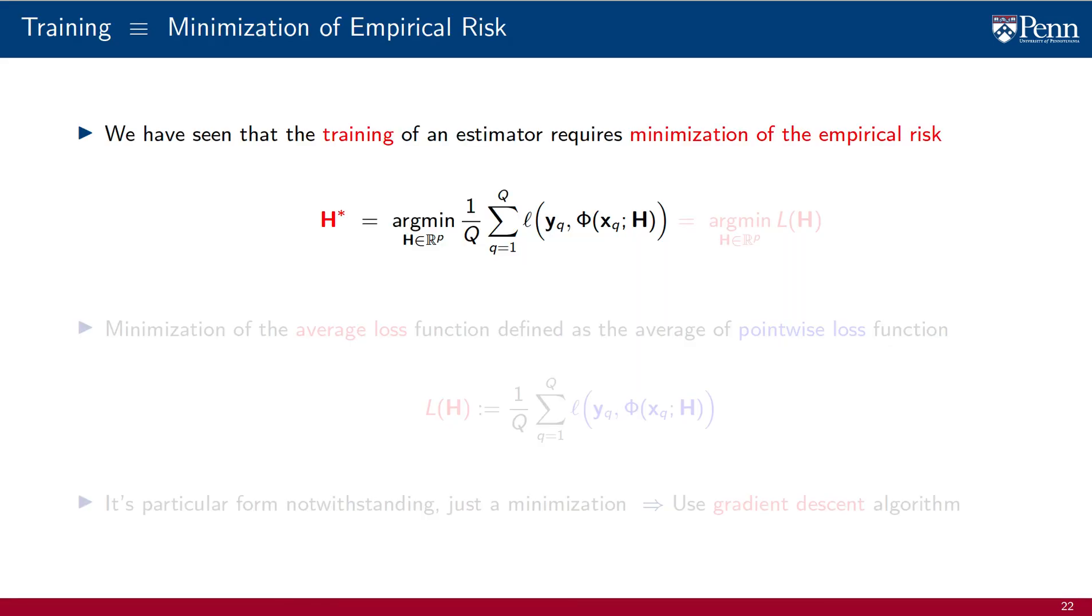The minimization problem associated with the training of an estimator is shown here in its parametric form, where the range of possible functions phi is spanned by a parameter h. Our goal is to find the optimal parameter h star.